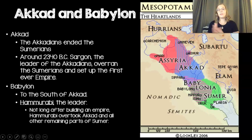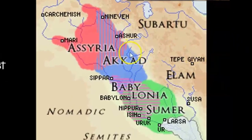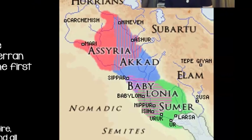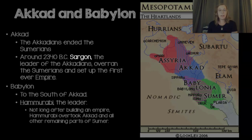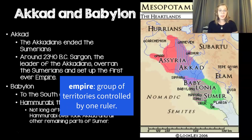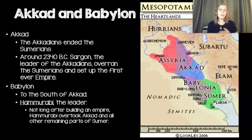Within Mesopotamia, two more groups that are going to become important are the Akkadians and the Babylonians. Akkad is in the blue area on our map, and Babylon is to the south, both north of Sumer. The Akkadians defeat the Sumerians and spread down towards Sumer. This happens around 2340 BC when the Akkadian leader Sargon takes over and sets up what becomes known as the first empire. To the south of Akkad is Babylon, led by the famous leader Hammurabi.